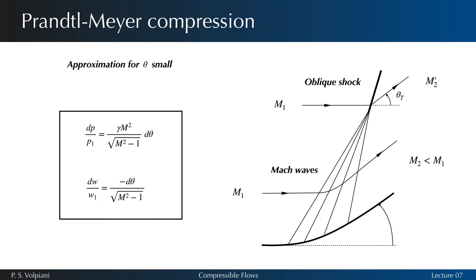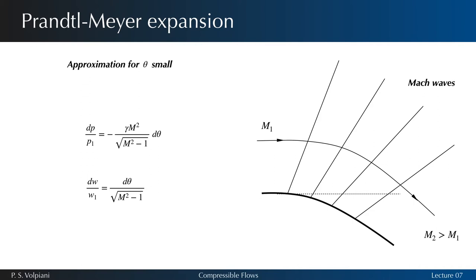In the case of a smooth concave wall, we have a Prandtl-Meier compression. In the case of a smooth convex wall or at a sharp convex turn, we have Prandtl-Meier expansions.